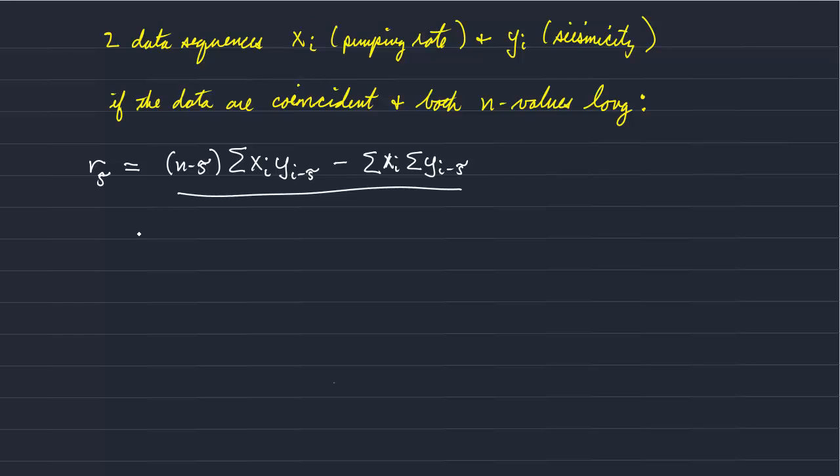And the denominator represents the square root of two variances. The first of which is the variance of x over the range of the data sequence being examined. And the second is or it's really proportional to the variance of the lagged y values over the range being compared.